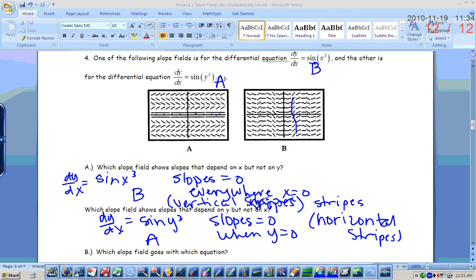Basically, you're not going to be drawing too many slope fields on your own. You're going to be matching a lot of slope fields. So I'm trying to give you tools for quickly matching slope fields, like figuring out where the slopes would be zero, or figuring out if you should have horizontal stripes or vertical stripes.